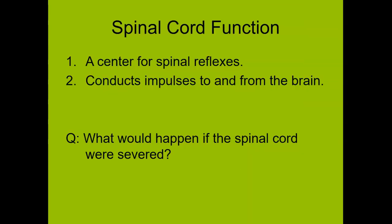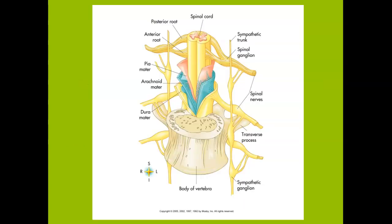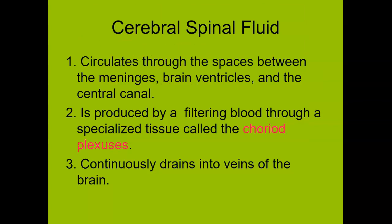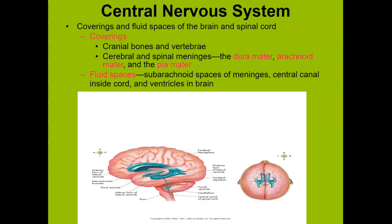The function of the spinal cord is spinal reflexes and movement, and conducting impulses to and from the brain. If the spinal cord were severed, information wouldn't go past the site where the cut was made, and that would lead to paralysis.